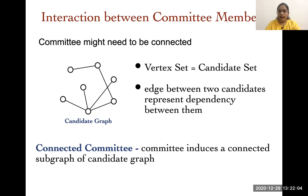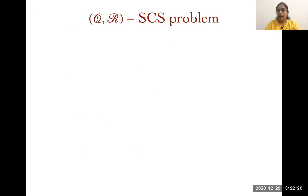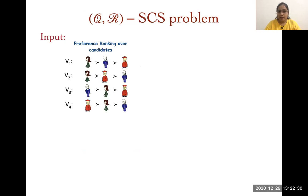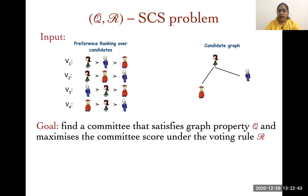In IJCAI 2018, Yang and Wang studied this model for approval voting. We study it for ordinal elections where we have a preference ranking over the candidates. Formally, the problem is the Q,R-SCS problem, where Q is a graph property and R is some voting rule. As input, we have a preference ranking over the candidates as in the classical committee selection problem, along with a candidate graph. The goal is to find a committee that satisfies graph property Q and also maximizes the committee score under voting rule R.